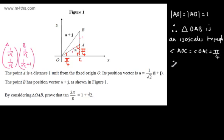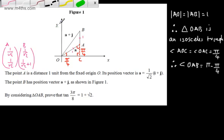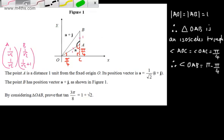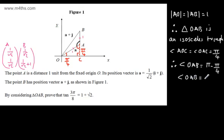Therefore, we can say that angle OAB will be equal to π minus π/4, considering the sum of angles on a straight line. So angle OAB equals 3π/4, or equivalently 6π/8. The reason I'm expressing it this way is to use this information in the isosceles triangle, where we have AB and AO.